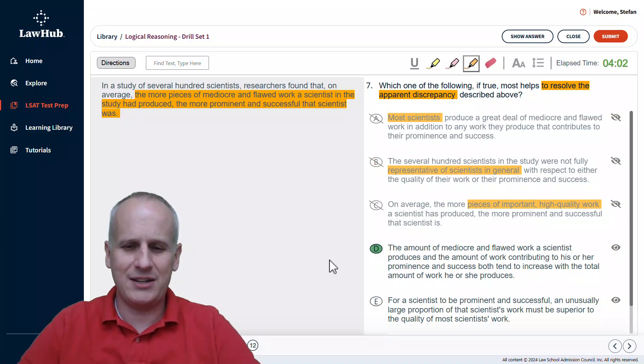As always, check E just to make sure. But for a scientist to be prominent and successful, an unusually large proportion of that scientist's work must be superior to the quality of most scientist's work. Well, we're not comparing one scientist to another. We're just saying that if you are a prominent scientist, you seem to have a lot of mediocre and flawed work. So, choice E certainly does not help to resolve the discrepancy either.